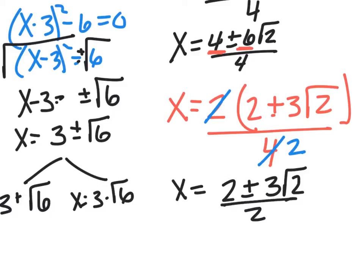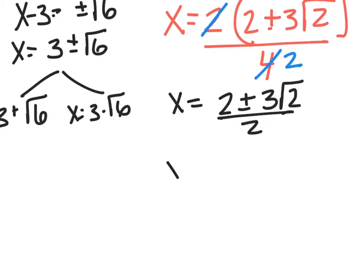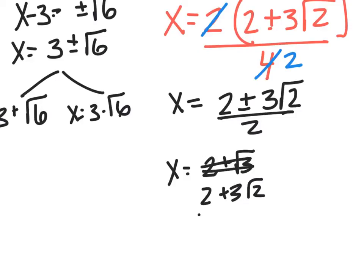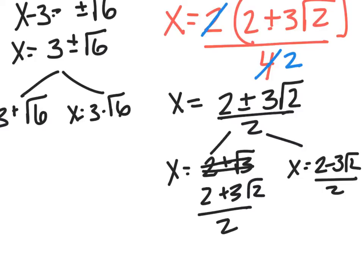So the two solutions are x = (2 + 3√2)/2 and x = (2 - 3√2)/2. I get four answers this time — they just all happen to be pretty messy. That's okay; that's going to happen a lot in Algebra 2. Not everything is going to be factorable.